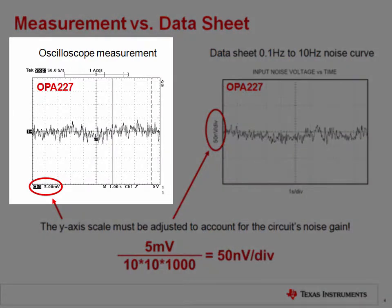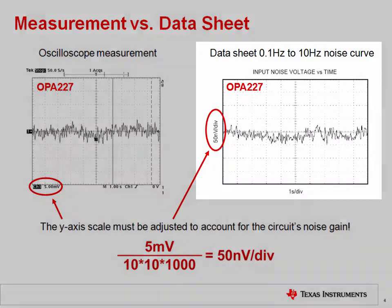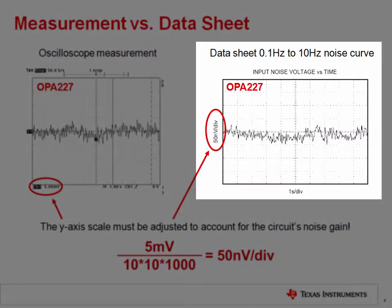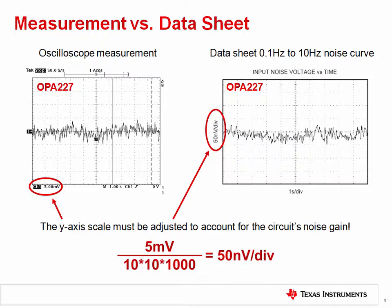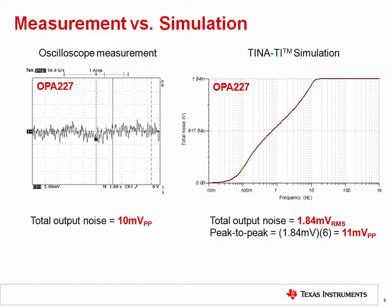The plot on the left shows the measurement made using the test circuit. The figure on the right is from the OPA227 datasheet. Note that the datasheet curve is referred to the input; to make the measured plot refer to the input, divide by the noise gain of 100,000. The measured result is very similar to the datasheet curve after the y-axis scale is adjusted. The circuit's noise can also be simulated using TINA-TI — watch parts five and six of this video series for a refresher on simulating op amp noise.